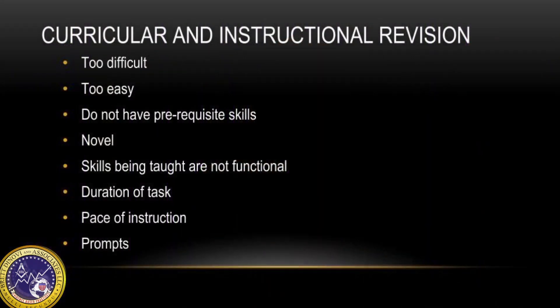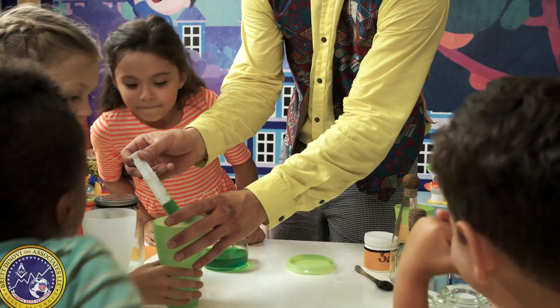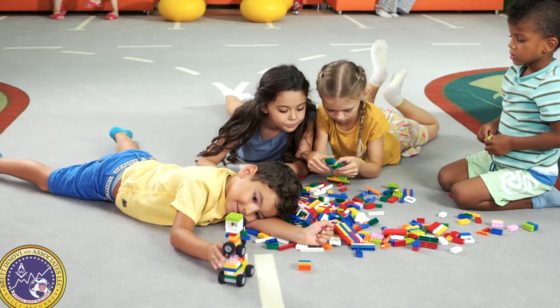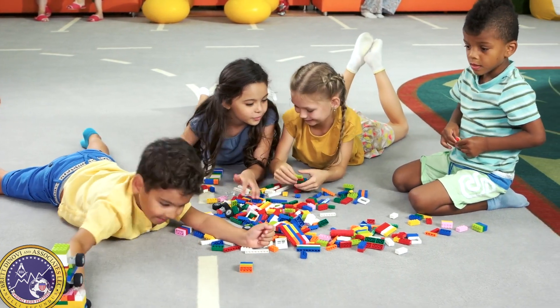The next intervention discussed is curricular revisions. You need to assess the curriculum or instruction to determine if it's appropriate. Sometimes escape-maintained problem behavior occurs because the task is too difficult, too easy, non-preferred, or novel. Other times it's not functional or of interest to the learner. Dunlop and colleagues in 1995 showed an increase in task completion when tasks were thought to be of interest or meaningful to the participant compared to when they were not.